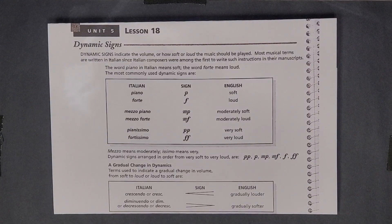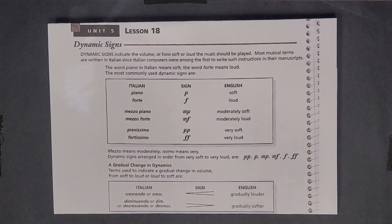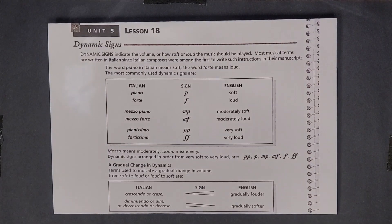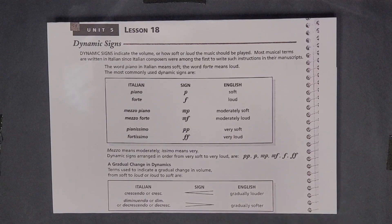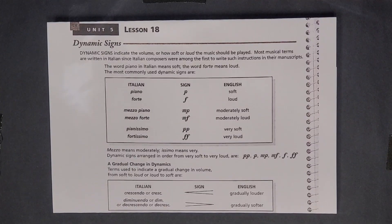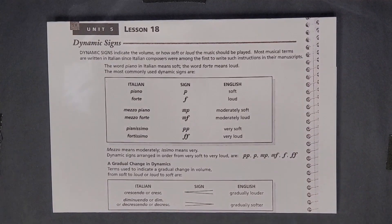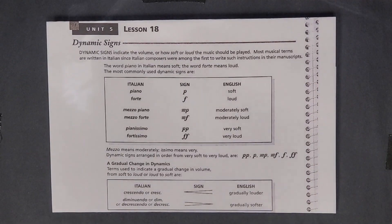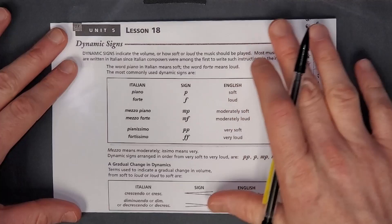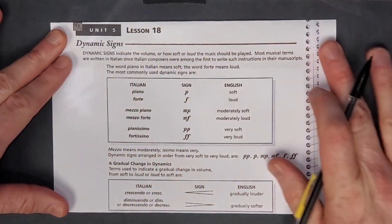Hey, Anthony here with another lesson from the Alfred's Essentials of Music Theory series. In this video I'll cover Unit 5, Lesson 18. Don't forget to subscribe so you never miss a new video. There is an index with links in the description so you can easily find the lessons you need. I highly recommend that you own a copy of this book and are only watching this video to check your work, review, or because you got really stuck on something. Okay, let's get right into it.